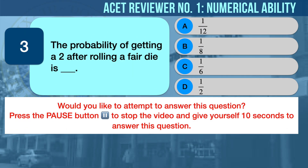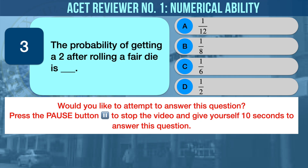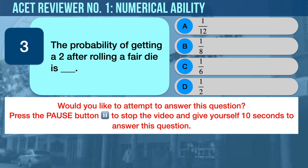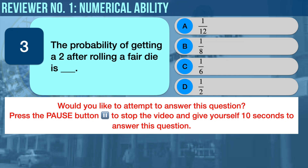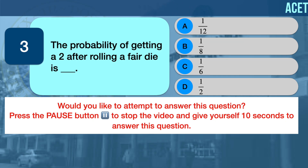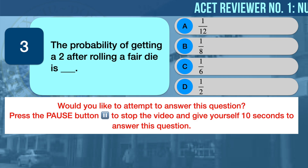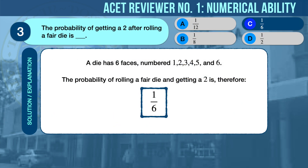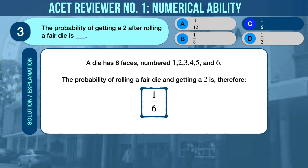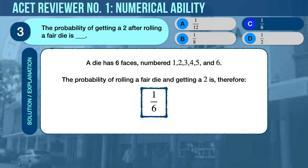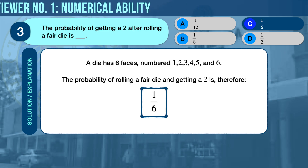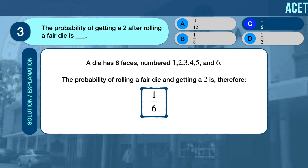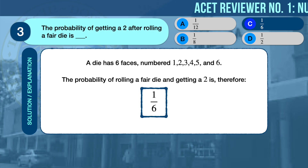Numerical Ability Problem Number Three: Probability. The probability of getting a 2 after rolling a fair die is — the correct answer is C, 1/6. A die has six faces numbered 1, 2, 3, 4, 5, and 6. The probability of rolling a fair die and getting a 2 is therefore 1/6.